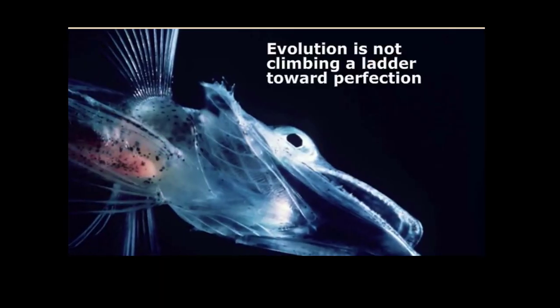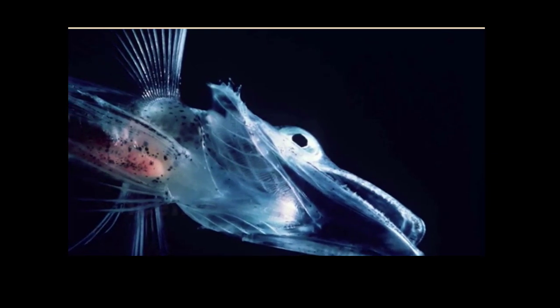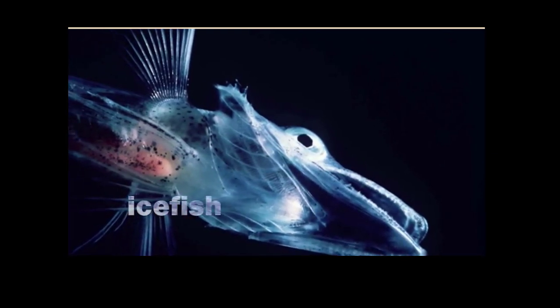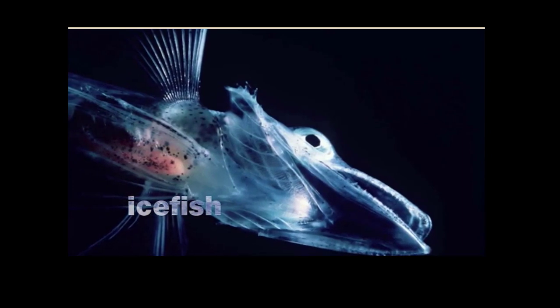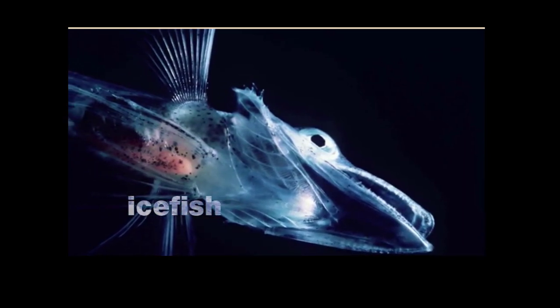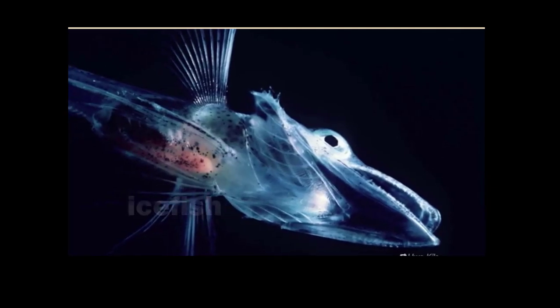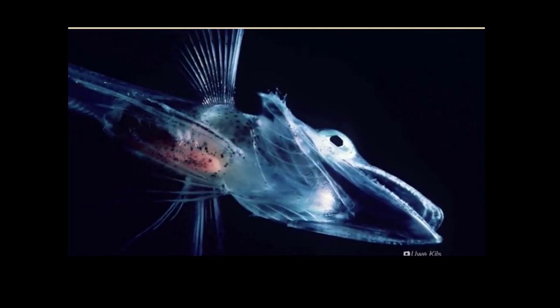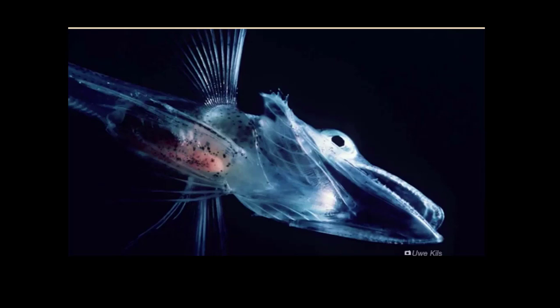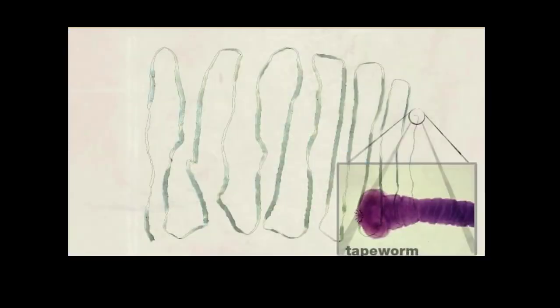Evolution is not climbing a ladder toward perfection. It is common for traits to disappear over the course of evolution. Arctic ice fish have lost their red blood cells, which might seem like a disadvantage, but their thinner blood can flow at temperatures below freezing, allowing them to occupy harsh environments where few predators can survive. Similarly, the parasitic tapeworm has completely lost the digestive and circulatory systems of its free-living ancestors. Instead, it uses its skin to absorb nutrients from its host's digestive tract.